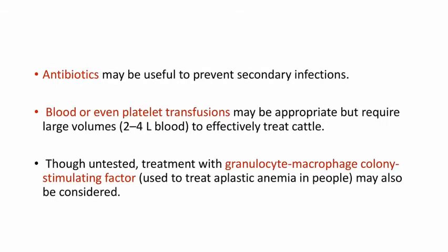Antibiotics may be useful to prevent secondary infections. Blood or even platelet transfusions may be appropriate but require large volumes — at least 2–4 liters of blood — to effectively treat cattle. Though untested, treatment with granulocyte-macrophage colony-stimulating factor, which is used to treat aplastic anemia in people, can be considered as a treatment option.